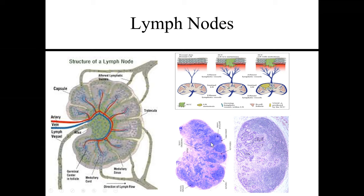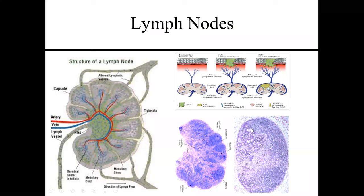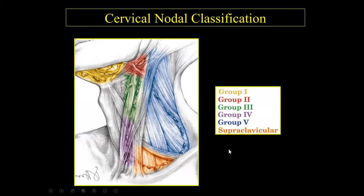The earliest signs of metastases will be in the periphery. Eventually, the lymph nodes become large and oval-shaped, as we see on the right-hand side. But as we'll see on CT scans, the earliest areas of low attenuation will also be in the periphery of the lymph nodes.